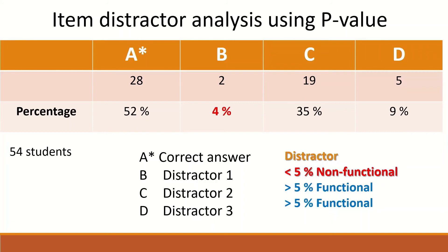This slide shows an example of item distractor analysis using the p-value or percentage value for 54 students participating in a test and answering a multiple choice question with four options: A, B, C, D. A is the correct answer; B, C, and D are the wrong answers, so they are distractors. To calculate the percentage for each distractor: distractor B had 2 students select it, so 2 divided by 54 multiplied by 100 equals 4%. Distractor C has a p-value of 35% and distractor D has a 9% proportion value.